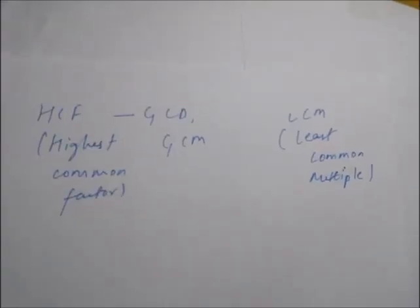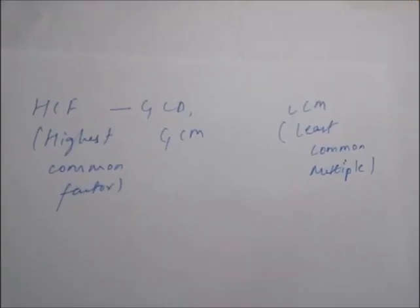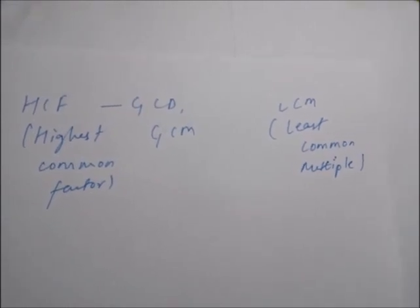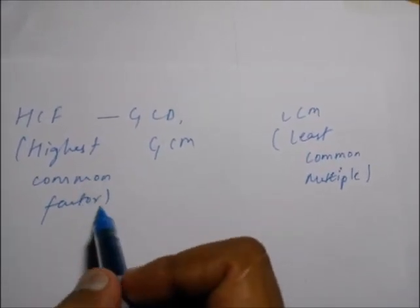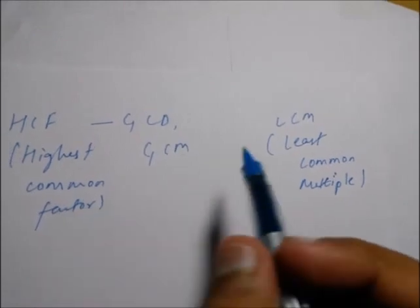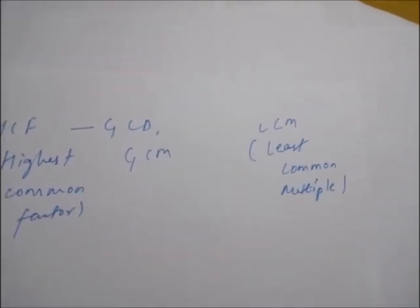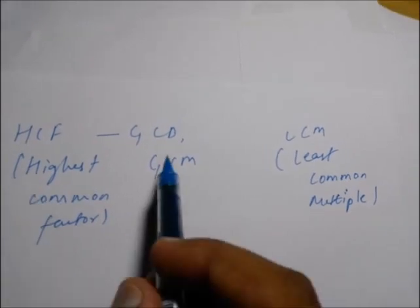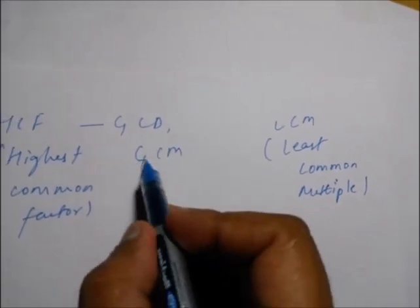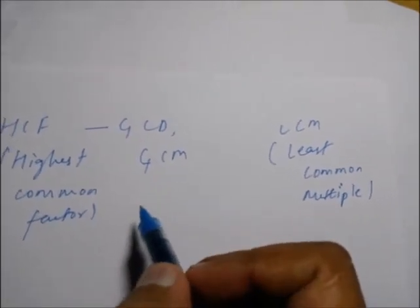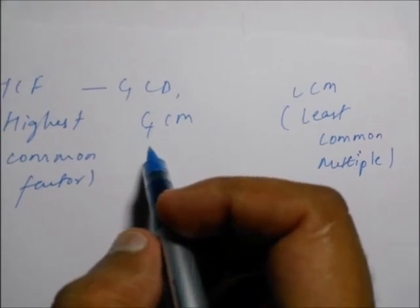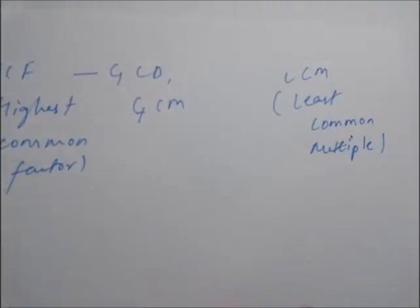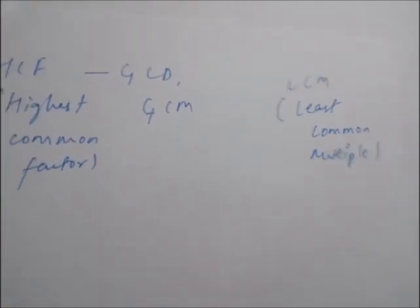Hello friends. In this video I am going to tell you about the HCF and LCM of numbers. HCF is highest common factor and LCM is least common multiple. We can also define HCF as GCD or GCM — GCD is greatest common divisor and GCM is greatest common measure.